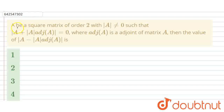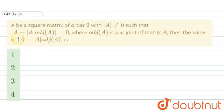Hello students, today's question is: A is a square matrix of order 2 with mod A not equal to 0, such that mod of (mod A plus mod A into adjoint A) equals 0, where adjoint A is the adjoint of matrix A. Then we have to find the value of mod A minus mod A into adjoint of A.